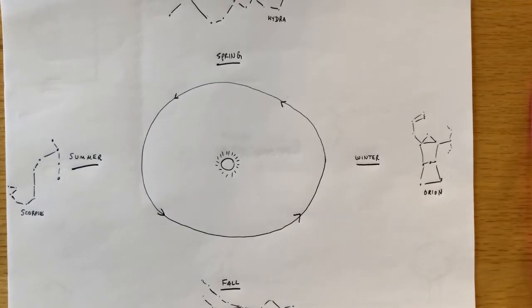All right guys, here's a quick explanation today of why constellations change where they're at in the night sky. Now we're going to look at two different things. The first one is why they change with the seasons.